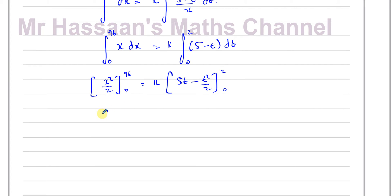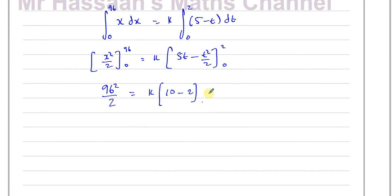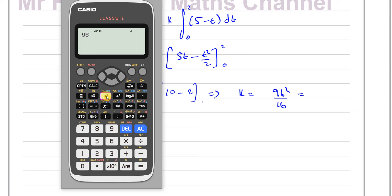Substituting in: 96²/2 − 0 = k × (5×2 − 4/2), which gives 96²/2 = k × 8. So k = 96²/16. Calculating: 96² = 9216, divided by 16 gives k = 576.